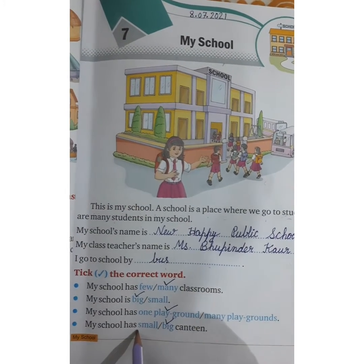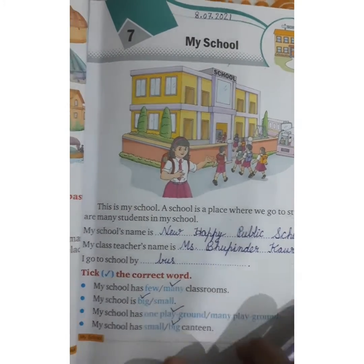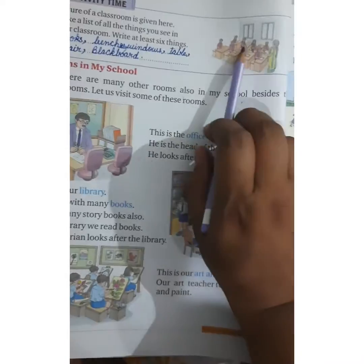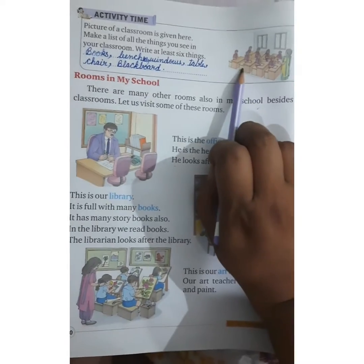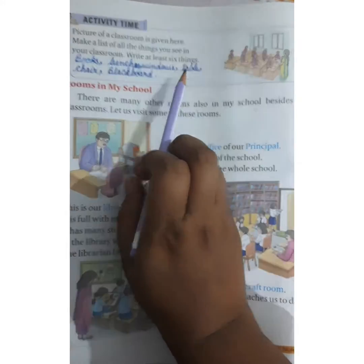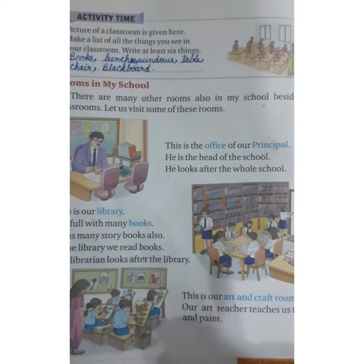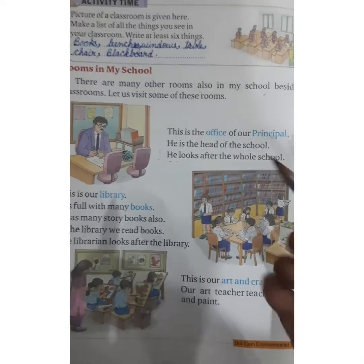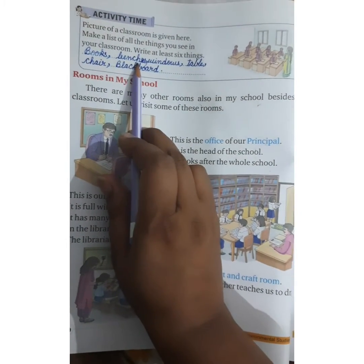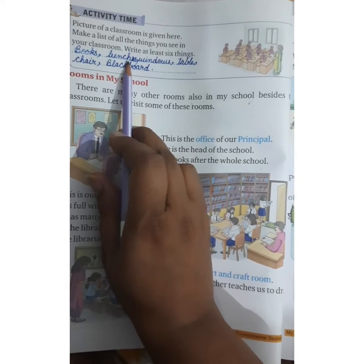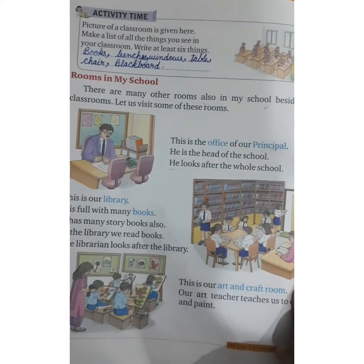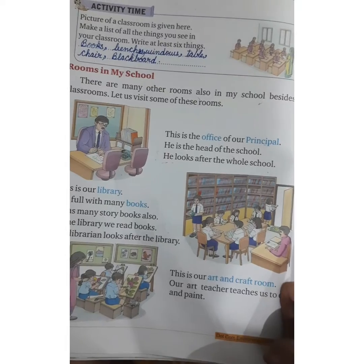Now come to the next page. In this picture there are six things mentioned. You have to see your class routine, what you have to do at school, what you can read here, and write more about the rooms in my school. Now we will discuss what rooms are there in school.